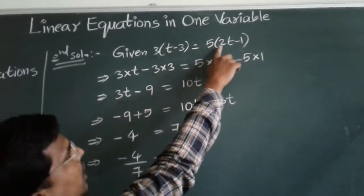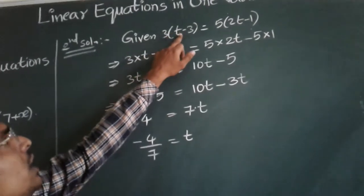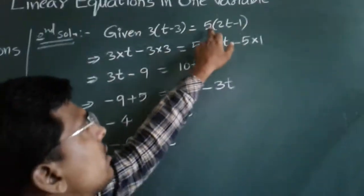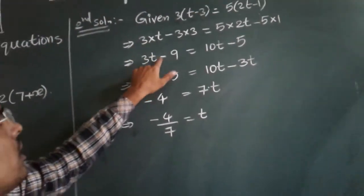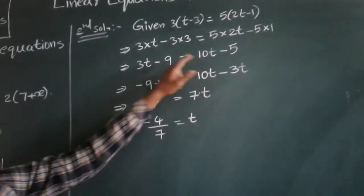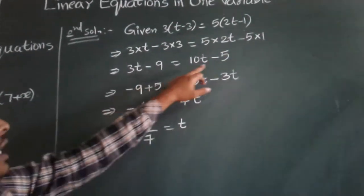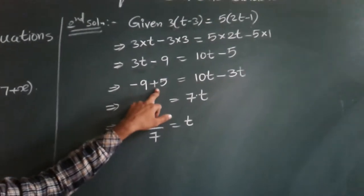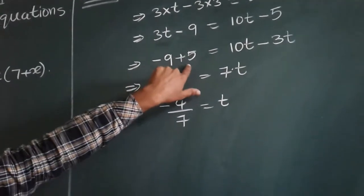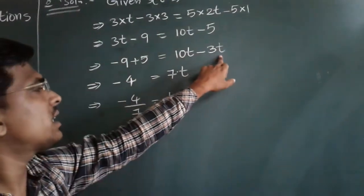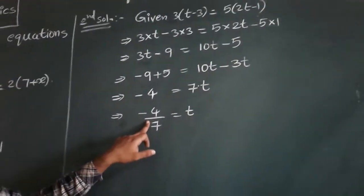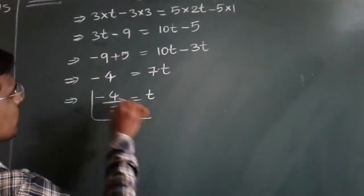To confirm: 3 into t minus 3 equals 5 into 2t minus 1. Expanding: 3t minus 9 equals 10t minus 5. Taking variables to one side and constants to the other — minus 9 plus 5 is minus 4, and 10t minus 3t is 7t. Sending 7 to the right hand side as a divisor gives t equals minus 4 by 7 as the required answer.